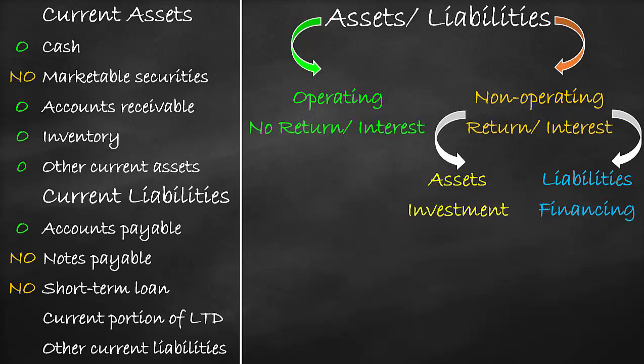The current portion of long-term debt means the company borrows a long-term loan from a bank, and the first part that needs to be paid to the bank within a year is called the current portion of the long-term debt. The company pays interest on the current portion of the long-term debt. Therefore, the current portion of the long-term debt is a non-operating current liability. Other current liabilities mean the company owes short-term liabilities used in operations that have a small value, and that's why we gather them together under other current liabilities. The company does not pay any interest on other current liabilities. Therefore, other current liabilities is an operating current liability.